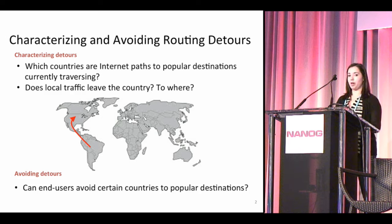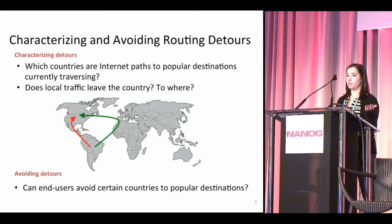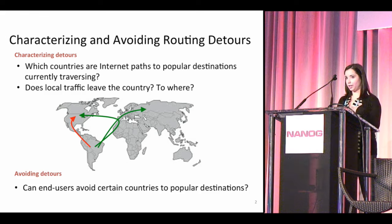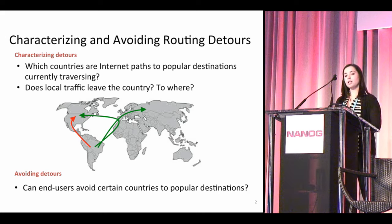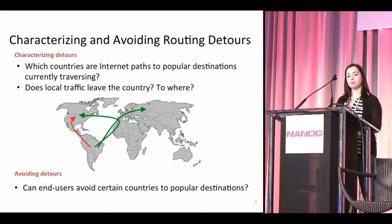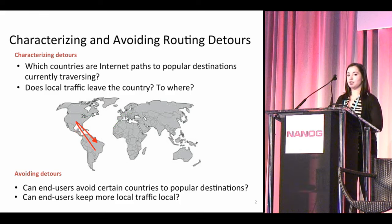We have a small example here. A client is in Brazil and is accessing content in the United States. The country-level path goes through Mexico — Brazil, Mexico, United States. The client in Brazil wants to avoid Mexico. One way to achieve this is routing around the country, so the path then goes from Brazil to Spain and to the United States.